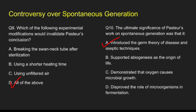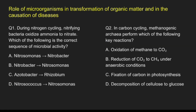Now we have questions from the role of microorganisms in transformation of organic matter and in the causation of disease. Question 1: During nitrogen cycling, nitrifying bacteria oxidize ammonia to nitrate. Which is the correct sequence of microbial activity? Option A, Nitrosomonas to Nitrobacter; Option B, Nitrobacter to Nitrosomonas; Option C, Azotobacter to Rhizobium; Option D, Nitrosococcus to Nitrosomonas. The correct answer is option A, Nitrosomonas to Nitrobacter. Nitrosomonas oxidizes ammonia to nitrite, and then Nitrobacter converts nitrite to nitrate.